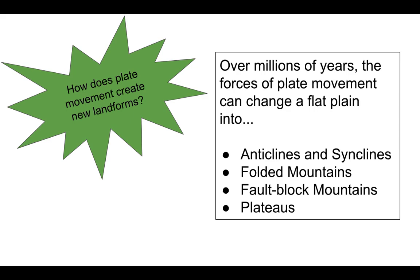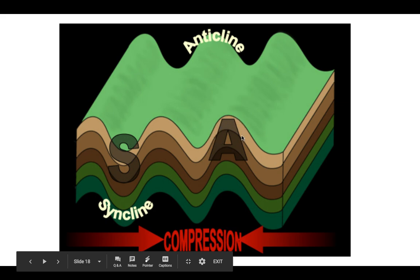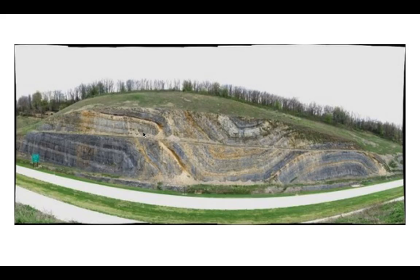How does plate movement create new landforms? Over millions of years, the forces of plate movement can change a flat plane into anticlines and synclines, folded mountains, fault block mountains, and plateaus. Anticlines are formed when rocks are compressed by tectonic plate forces — they can be as small as the side of a cliff or as large as an entire valley. Anticlines are the crest of the wave, while synclines are the dip. Here's an example of small anticlines and synclines on an outcrop of rock alongside a road.